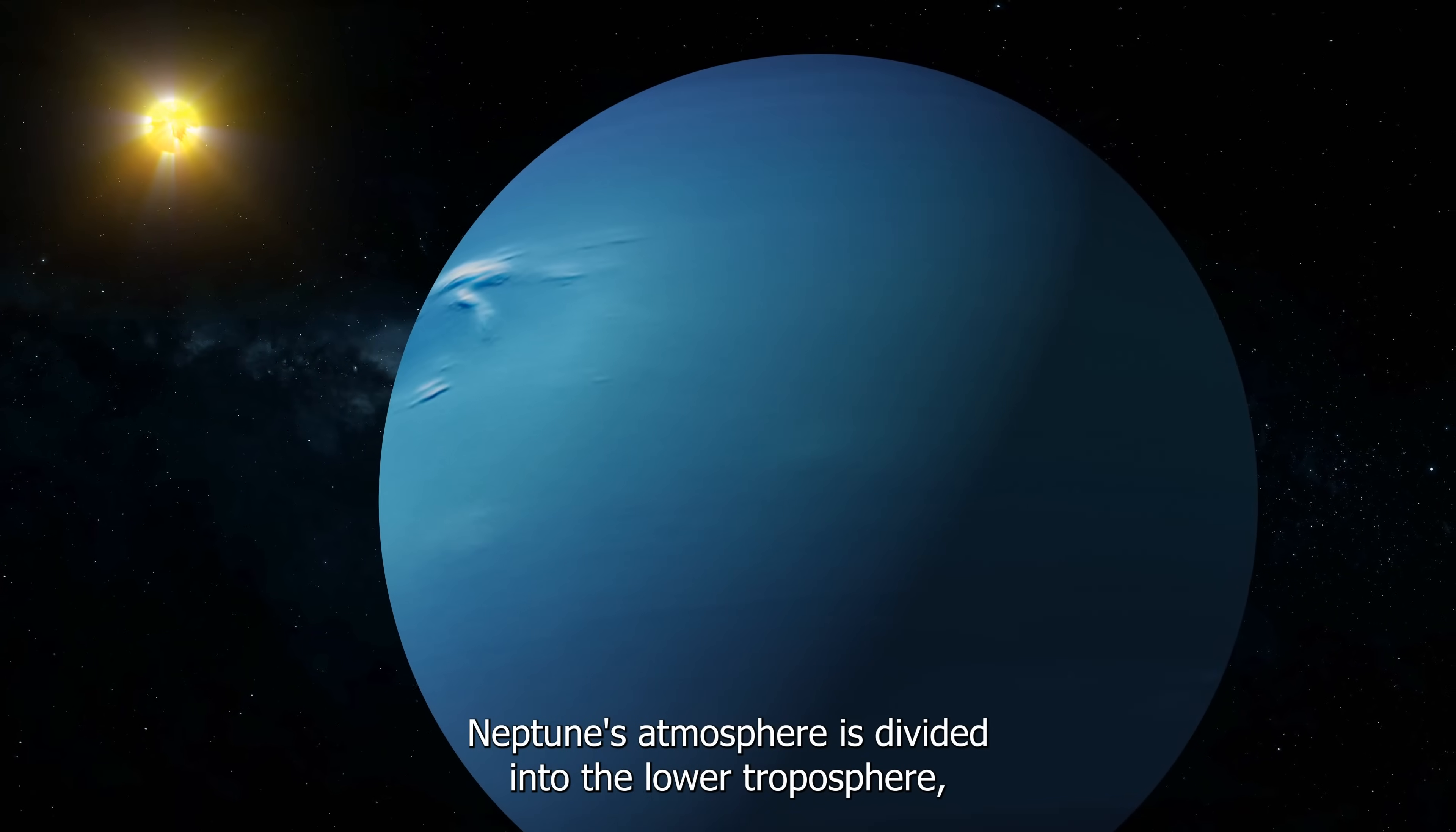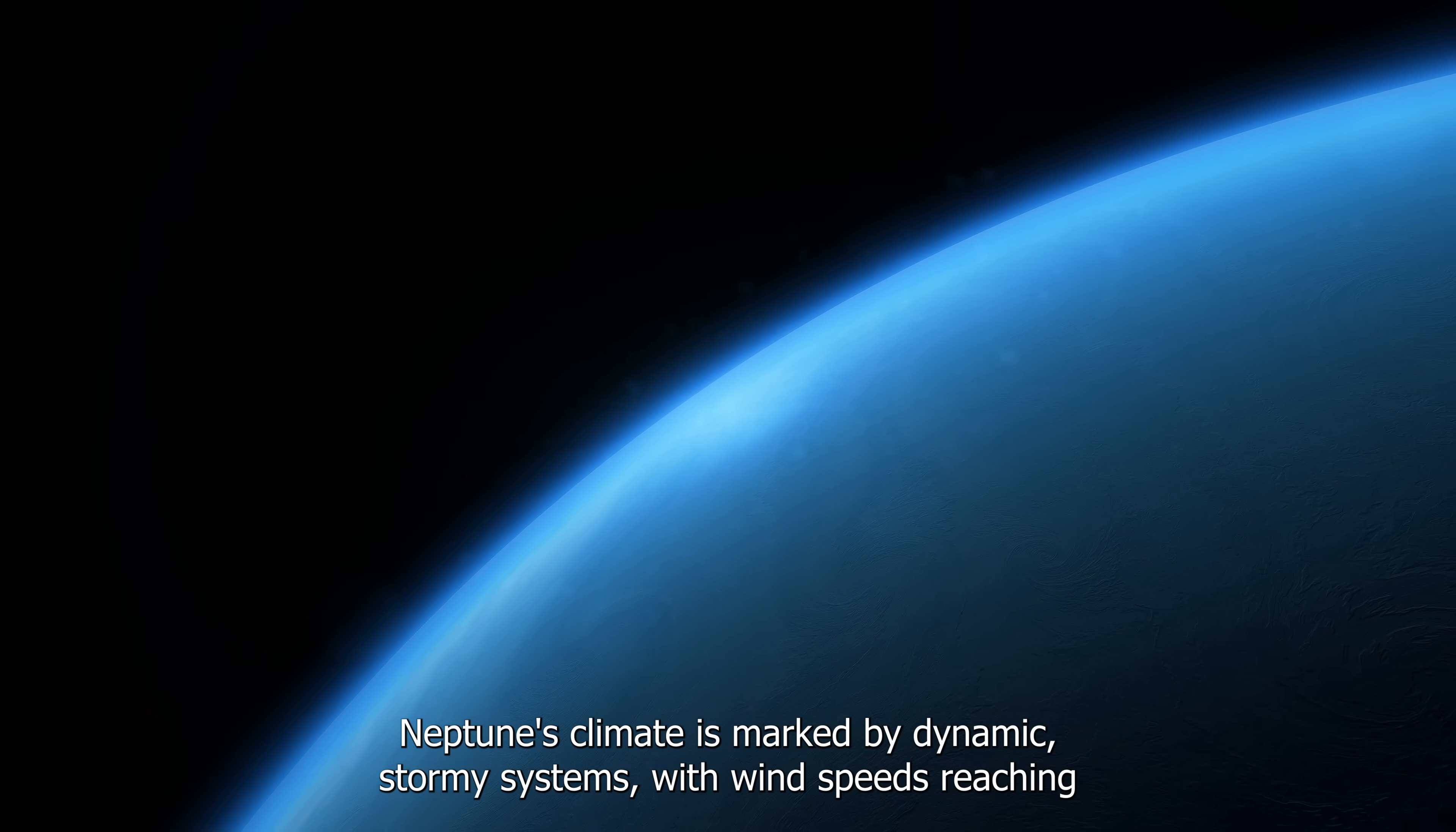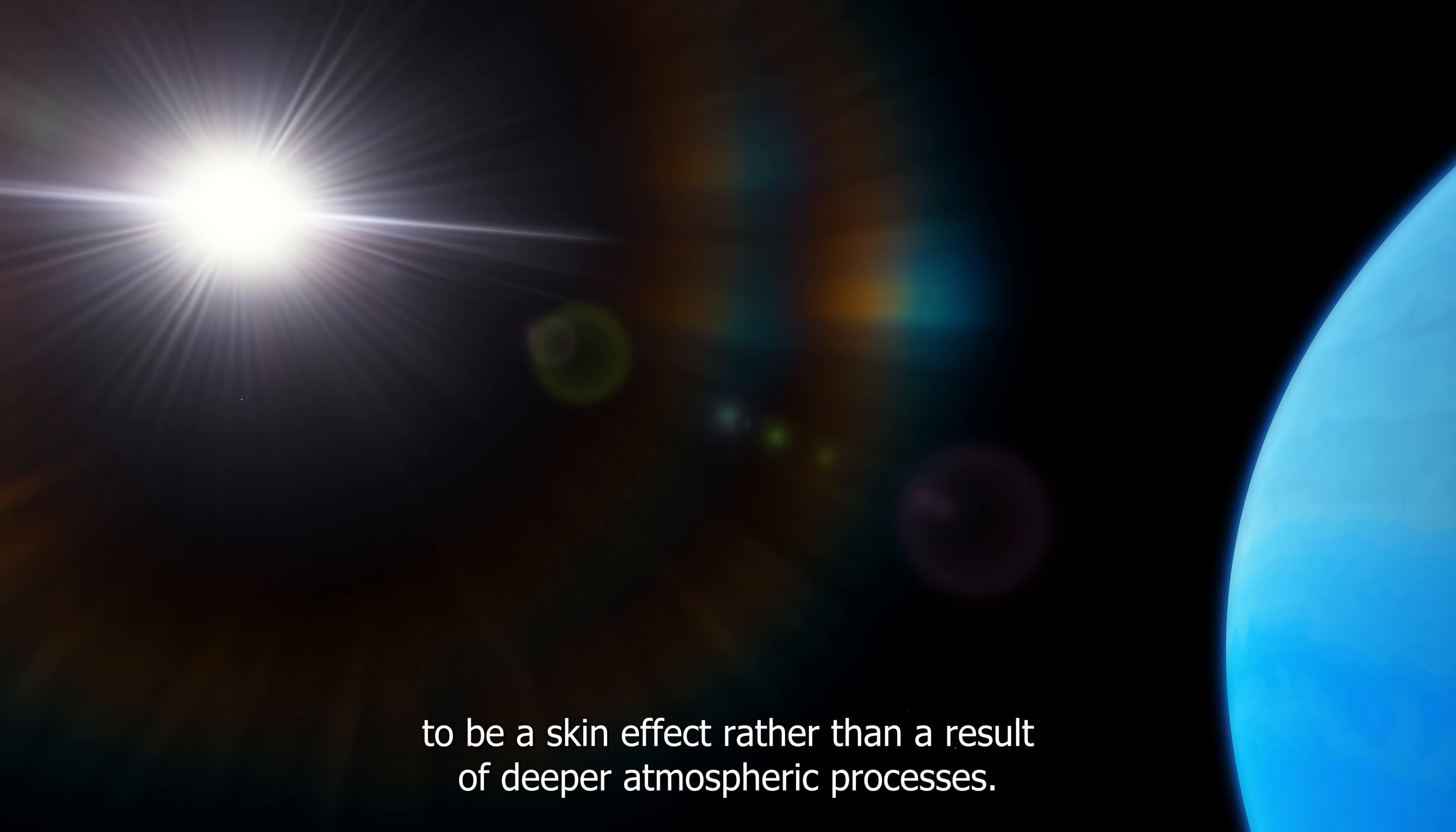Neptune's atmosphere is divided into the lower troposphere, where temperature decreases with altitude, and the stratosphere, where temperature increases with altitude. The tropopause serves as the boundary between these two regions. Neptune's climate is marked by dynamic stormy systems, with wind speeds reaching almost 600 meters per second, making it unsuitable for human habitation. Prevailing winds exhibit prograde rotation at high latitudes and retrograde rotation at lower latitudes.